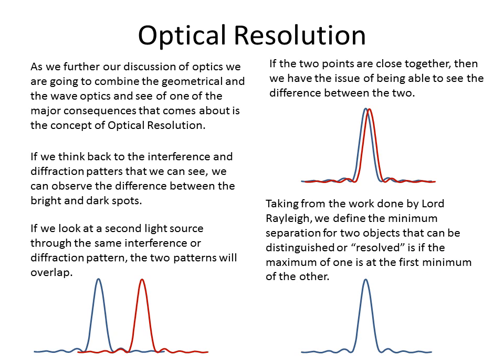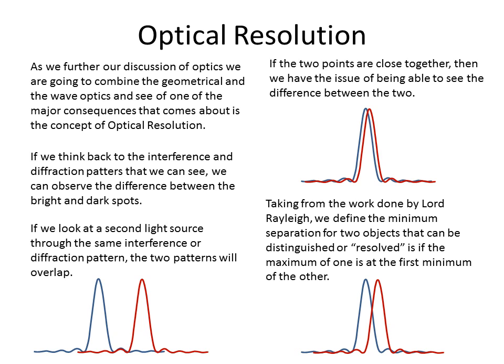If we start off with one and put a second in, moving them closer together, right at the point where this peak corresponds with the minimum, these two are at the minimum separation — the minimum distance apart — where we can actually resolve the two points. The total intensity will have some fluctuations; we'll get a peak, it'll dim down, and then we'll get another peak. Notice we won't actually get to zero here — we'll get peak, peak — but these two intensity peaks, we'll actually be able to see the difference. That's what we call being resolved.